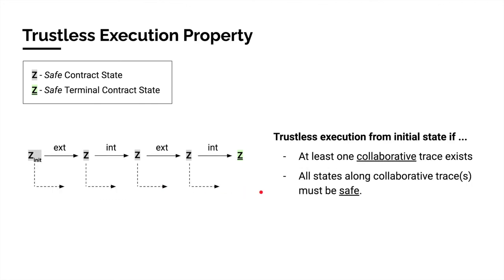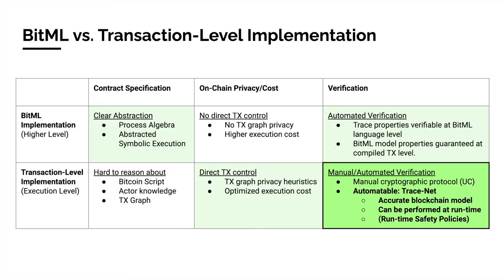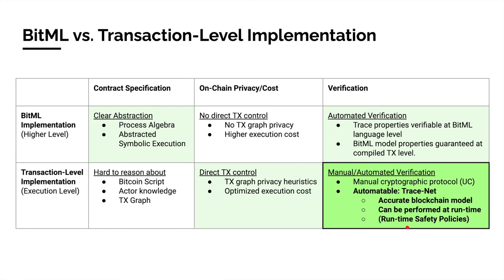Finally, a contract features the trustless execution property if from the initial contract state, at least one collaborative trace exists to a safe terminal state. Furthermore, all states along this collaborative trace must be safe, guaranteeing that the contract can be terminated at any state throughout the execution. In summary, Tracenet is an automatable verification framework for contracts implemented at the transaction level. It can be performed at runtime and features an accurate blockchain model which allows us to describe transaction delays or blockchain reorganizations by adversarial actors. Because it can be run at runtime, it can be used as a monitoring framework for the execution of contract implementations, or for enforcing universal contract policies at runtime. Thank you very much.